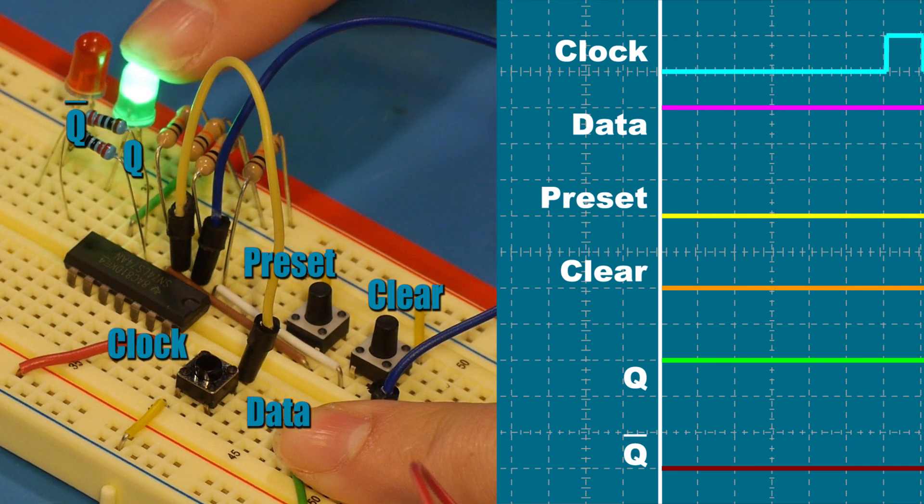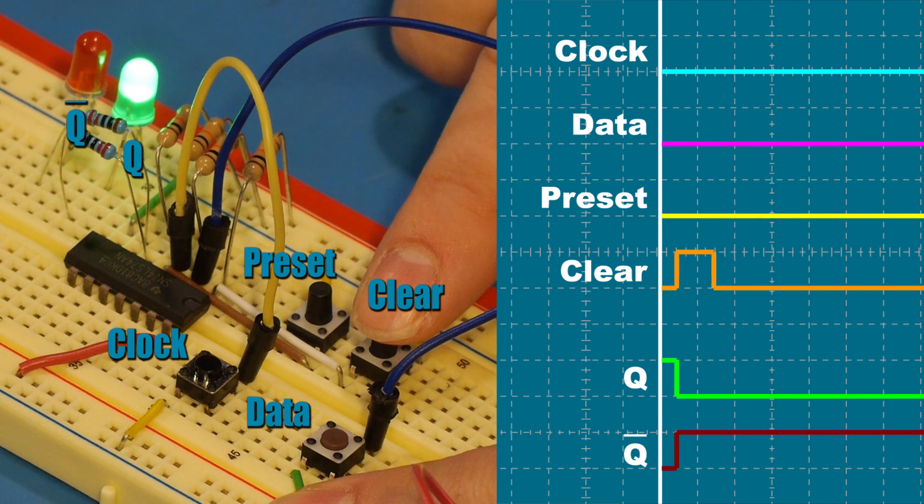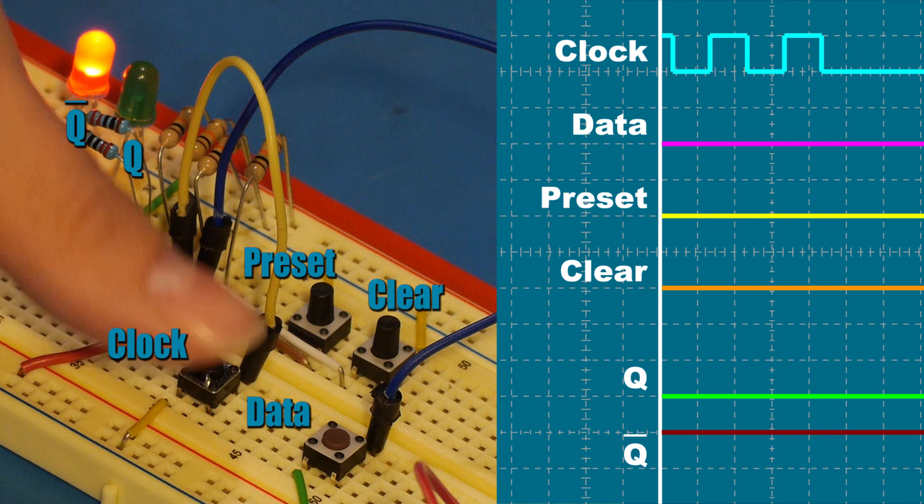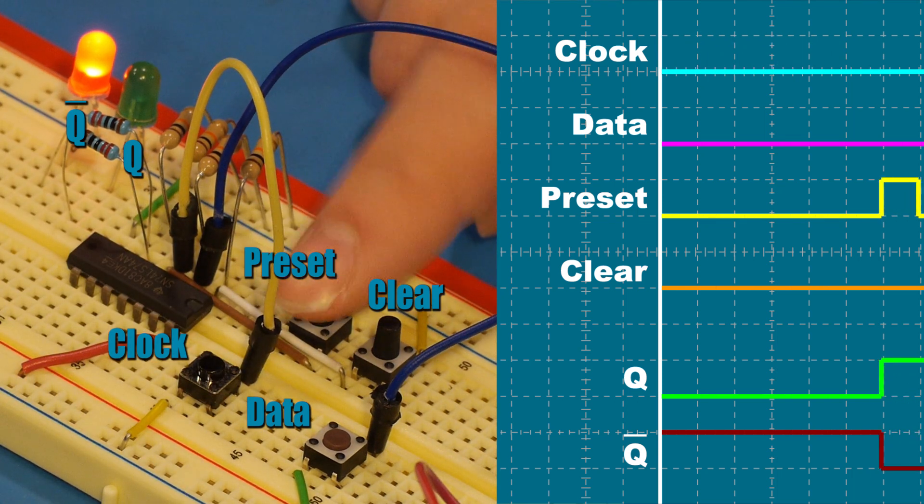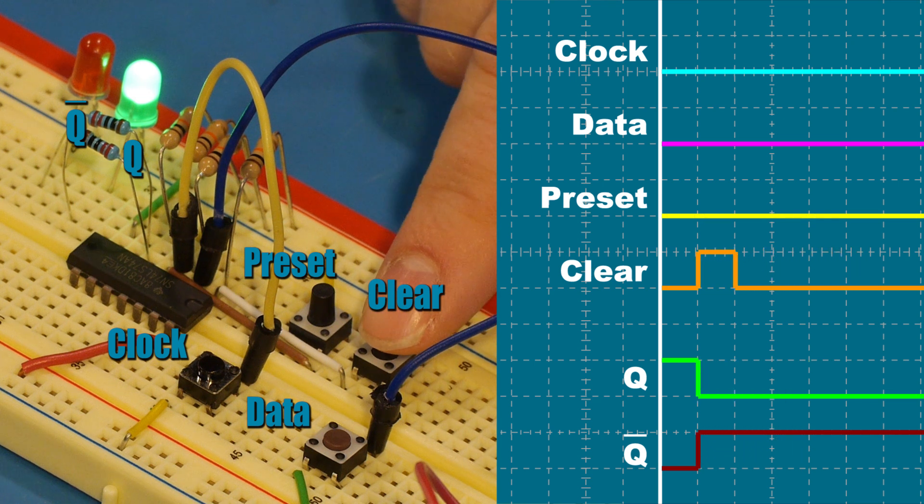If data and output Q are high, the clock pulse doesn't change the outputs. If data and output Q are low, again, the clock doesn't change anything. So preset alone sets the output high, and clear alone resets the output back to low.